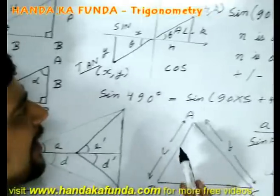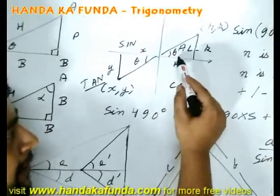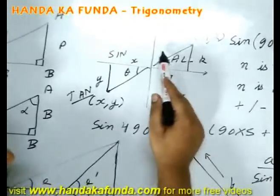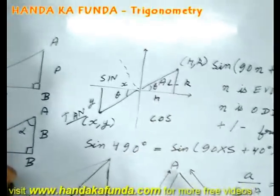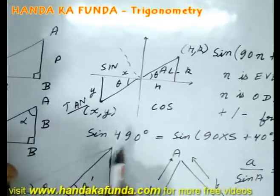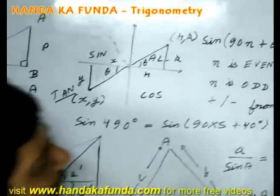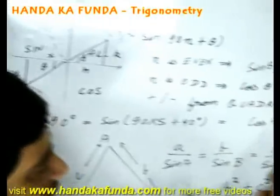Once again the plus sign or the minus sign will be determined by the quadrant. 490 degrees, where will it lie? One full circle makes it 360. Another 90 degree that makes it 450. So it lies 40 degrees in the second quadrant. In the second quadrant my sign is positive. That means my answer will be plus cos 40 degree.